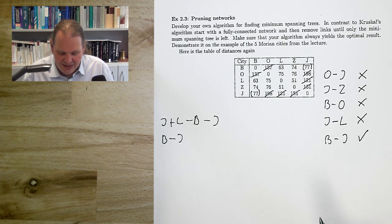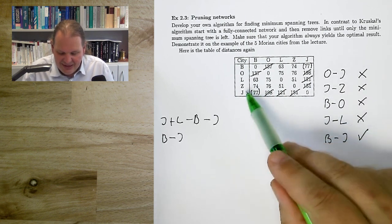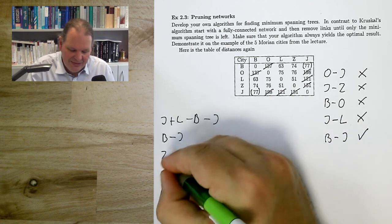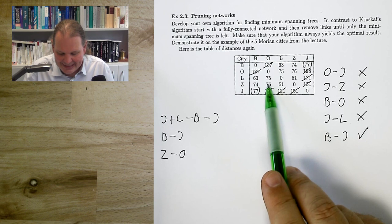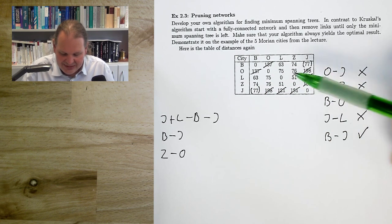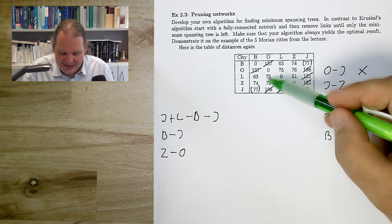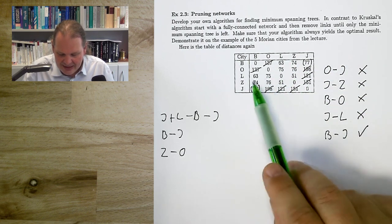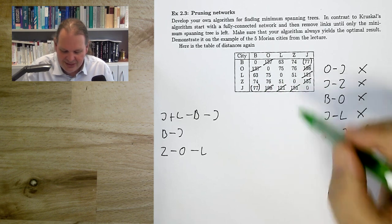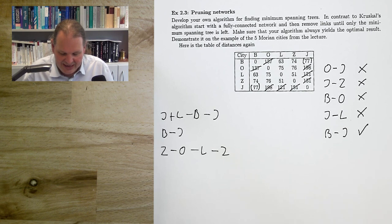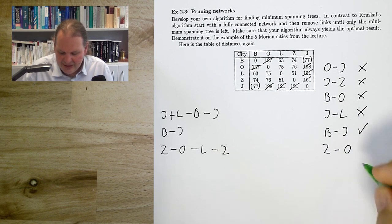Next is 76: Zlín to Ostrava. If I go from Zlín to Ostrava, from Ostrava the only remaining link goes to Olomouc, and from Olomouc I can go back to Zlín. That's a cycle — I can break the 76 kilometer link Zlín–Ostrava.